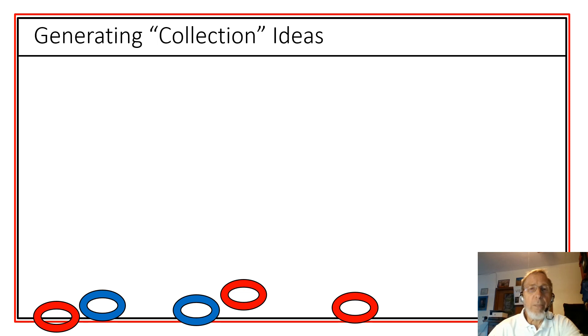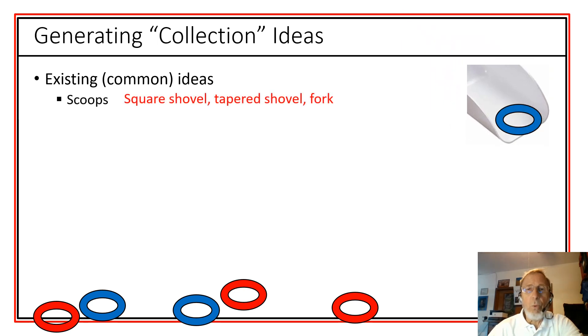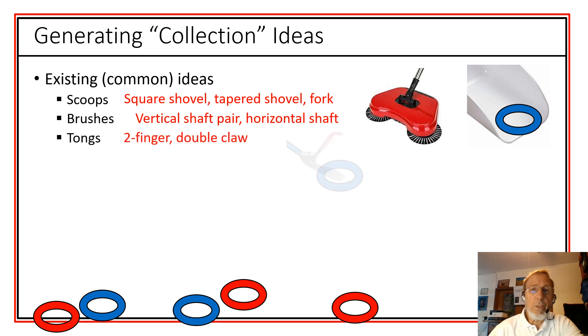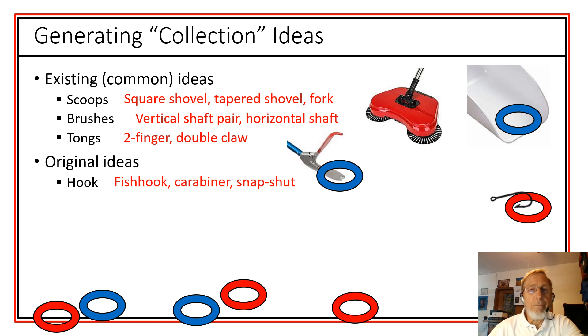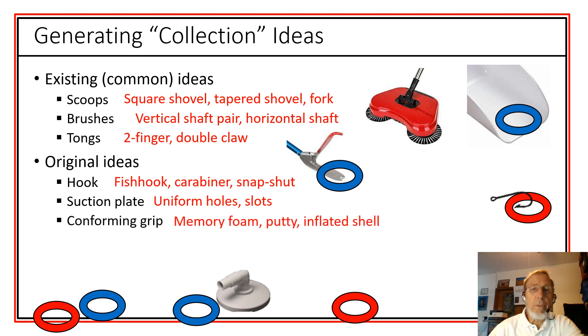Let's take some examples. Let's look at collection system ideas. First, what might be some common ways for collecting things such as these rings. One could be just a scoop of different shapes. Brushes. Tongs. We could come up with some off-the-wall ideas. A hook. A suction plate. A conforming grip. Something that conforms around what we're trying to pick up. Or something that you insert and then it expands to grab it.